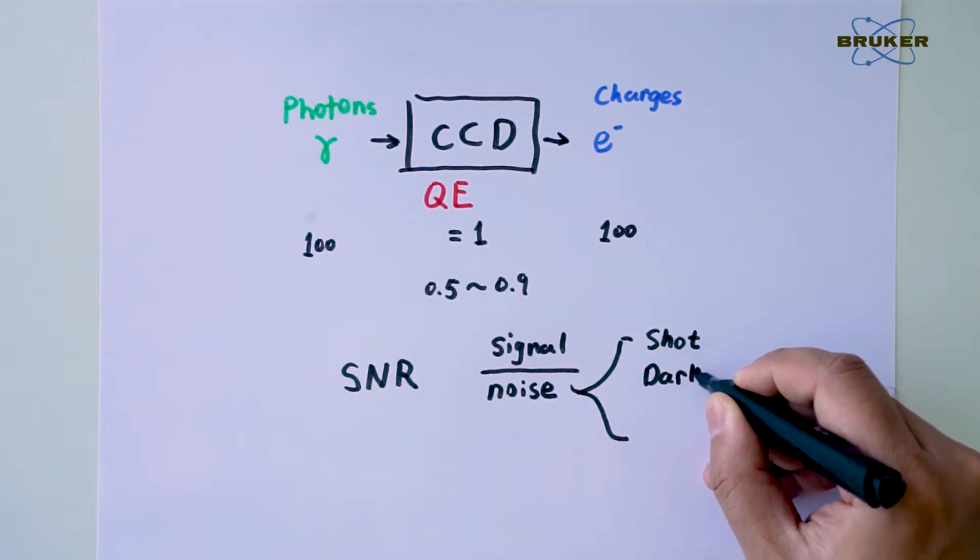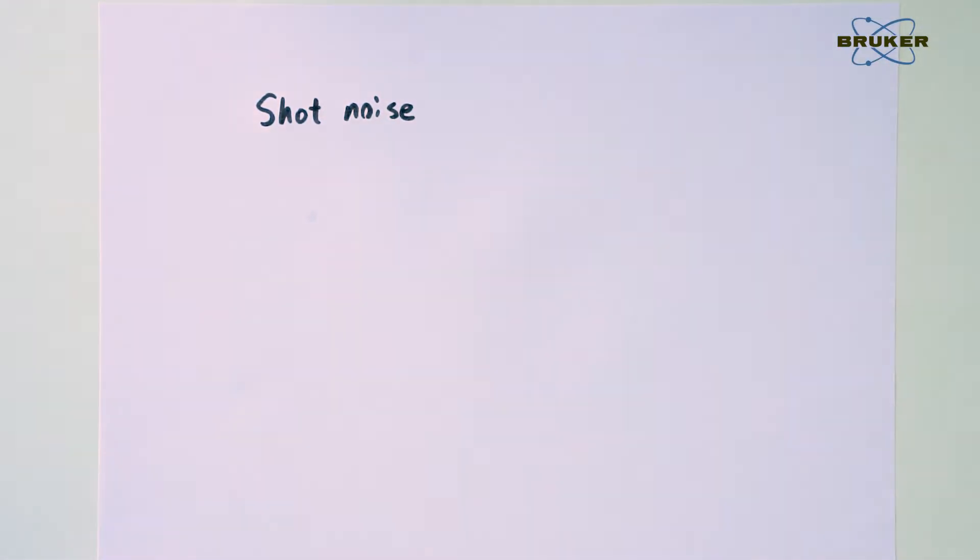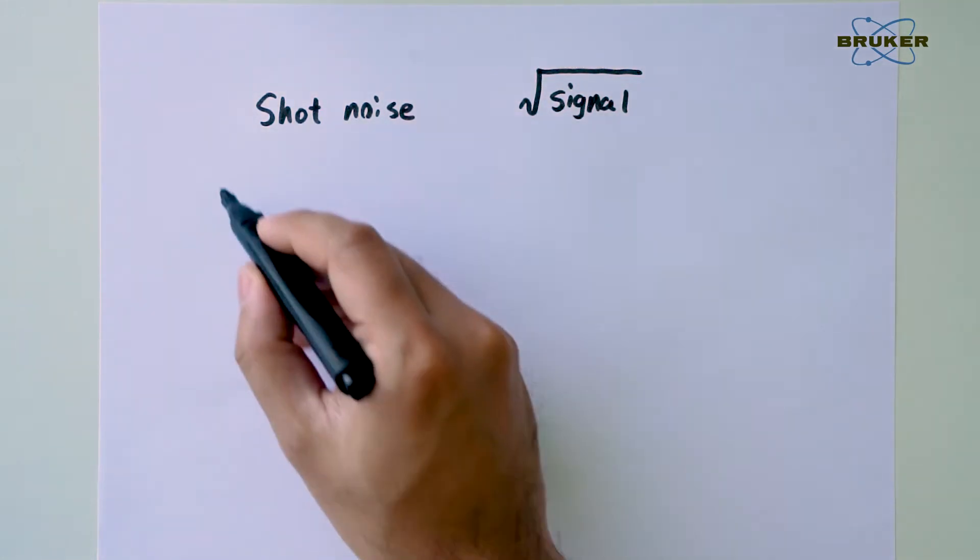The shot noise, the dark noise, and the read noise. Shot noise is the nature of the CCD. The noise level is always the square root of the signal. We are not able to influence this.